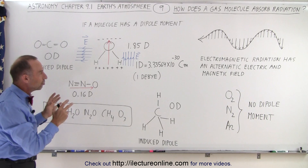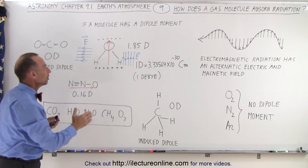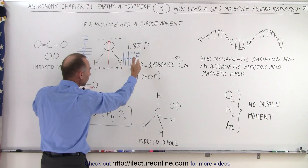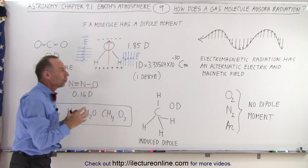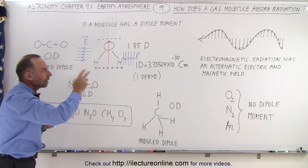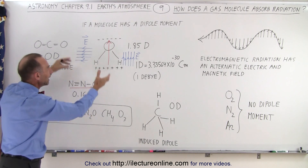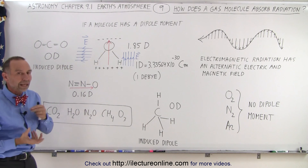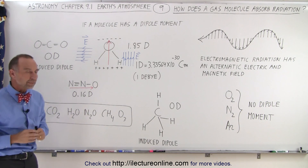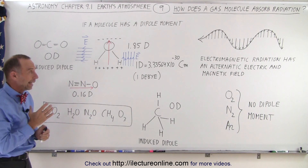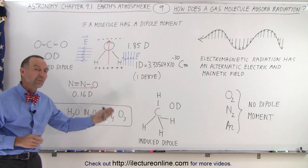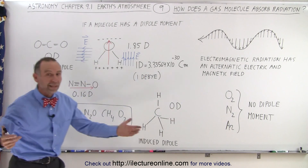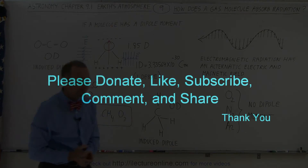So that's how energy is absorbed from electromagnetic radiation — through the interaction between dipole moments, either existing or induced, so that the electric field within the electromagnetic radiation can interact with the dipole moment of the molecule and cause it to rotate or vibrate in some mode. That's how these molecules are champions at absorbing energy, and that's why molecules like oxygen, nitrogen, and argon simply cannot do it. And that's how it's done. Thank you very much.